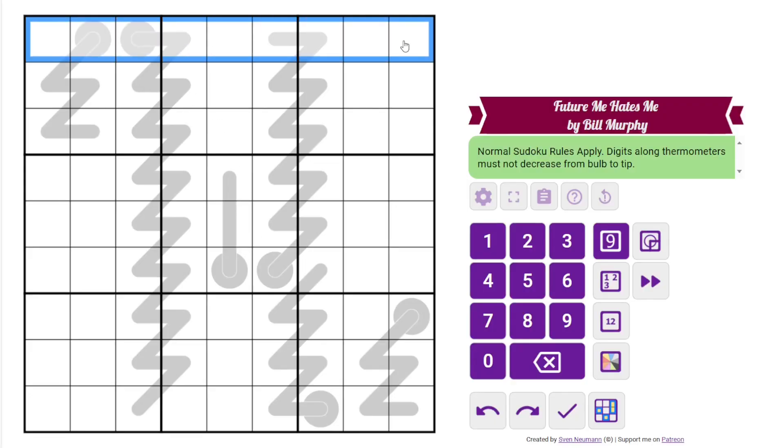This is a slow thermo Sudoku. We have normal Sudoku rules, one to nine in each row, column, and three by three box. Additionally, we have thermometers in the grid. And normal thermometers must increase as we go from the bulb to the tip. So for example, this could be one, three, four, seven, nine, something like that.